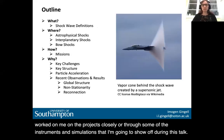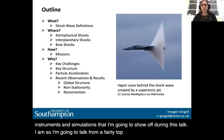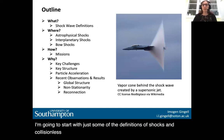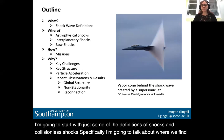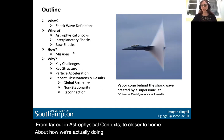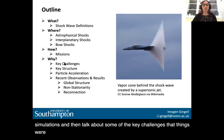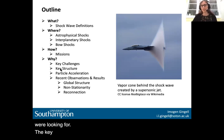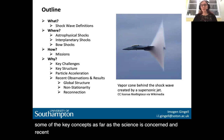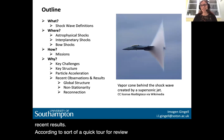I'm going to talk from a fairly top-down perspective. I'll start with some definitions of shocks and collisionless shocks specifically, then talk about where we find them from astrophysical contexts to closer to home, and about how we're actually doing the science in terms of missions or simulations. Then I'll talk about some of the key challenges, key structures in the bow shock itself, and go through some key concepts and recent results — a quick tour reviewing shock physics over the last few years.